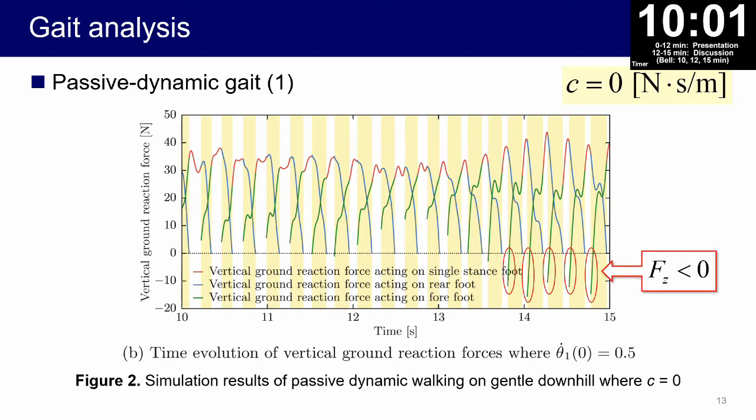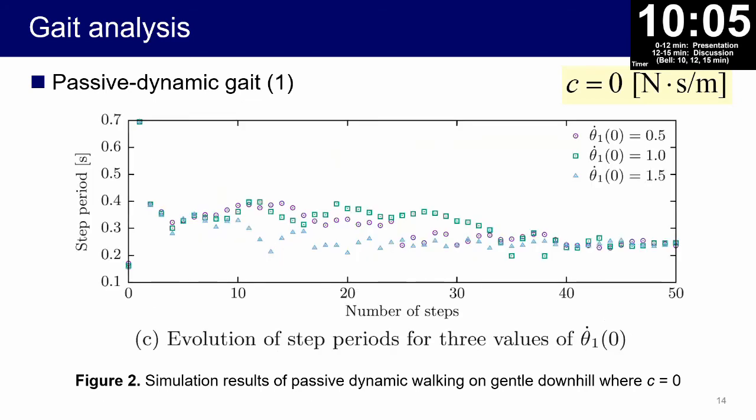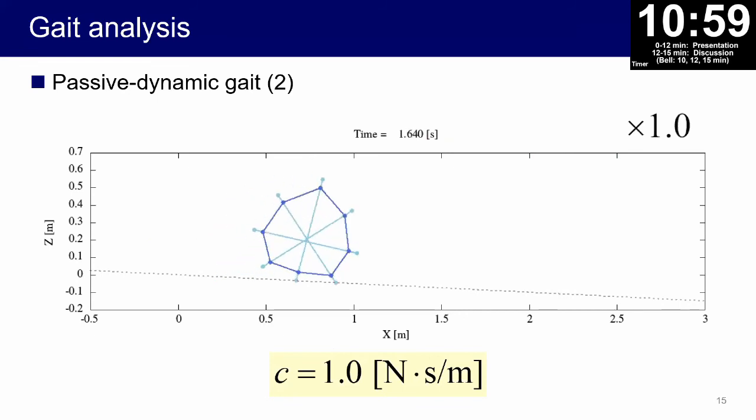This figure shows evolution of the step periods for three values of theta one dot zero, the initial angular velocity. We can see that the step period in each case did not converge to a steady value. We conducted a lot of analysis to generate a stable passive dynamic gait by adjusting various parameters, but regardless of the parameters, the vertical ground reaction force acting on the forefoot became negative during motion. We finally had to conclude that it is impossible to generate a stable passive dynamic gait only with elastic elements. We then added a damper damping effect.